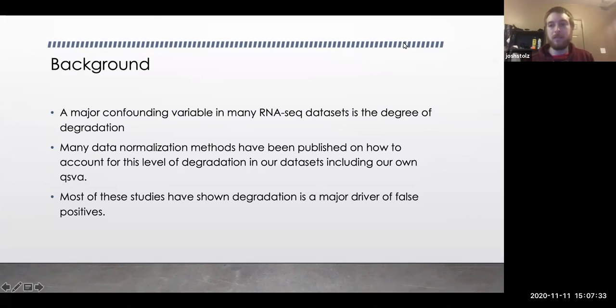But to give a little background, as to why this is relevant, one of the major confounding variables for RNA-seq datasets, and this is everywhere, is the issue of degradation. Both degradation of the tissues and degradation of the actual mRNA itself. And it's not uniform. This is kind of the key part that makes it really difficult is some RNA transcripts degrade faster than others.